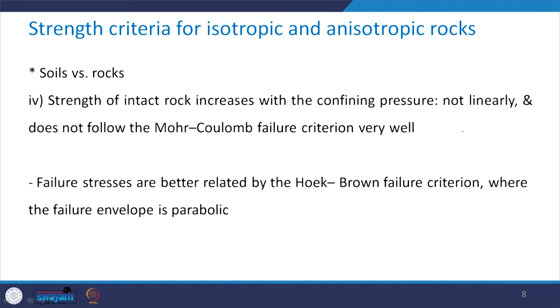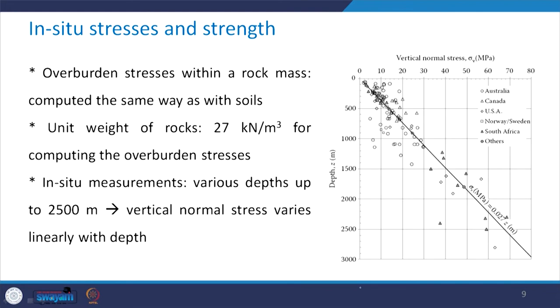The fourth criteria is the strength of the rock. For intact rock, it increases with the confining pressure, and this increase is not linear and does not follow the Mohr-Coulomb failure criterion very well. In this chapter we will learn about the details of the Mohr-Coulomb criterion and other criteria which are more suitable for rocks and rock masses. In the case of rocks, failure stresses are better related by the Hoek-Brown failure criterion, where the failure envelope is parabolic and not linear. But in the case of soils, the Mohr-Coulomb failure criterion is fairly applicable.